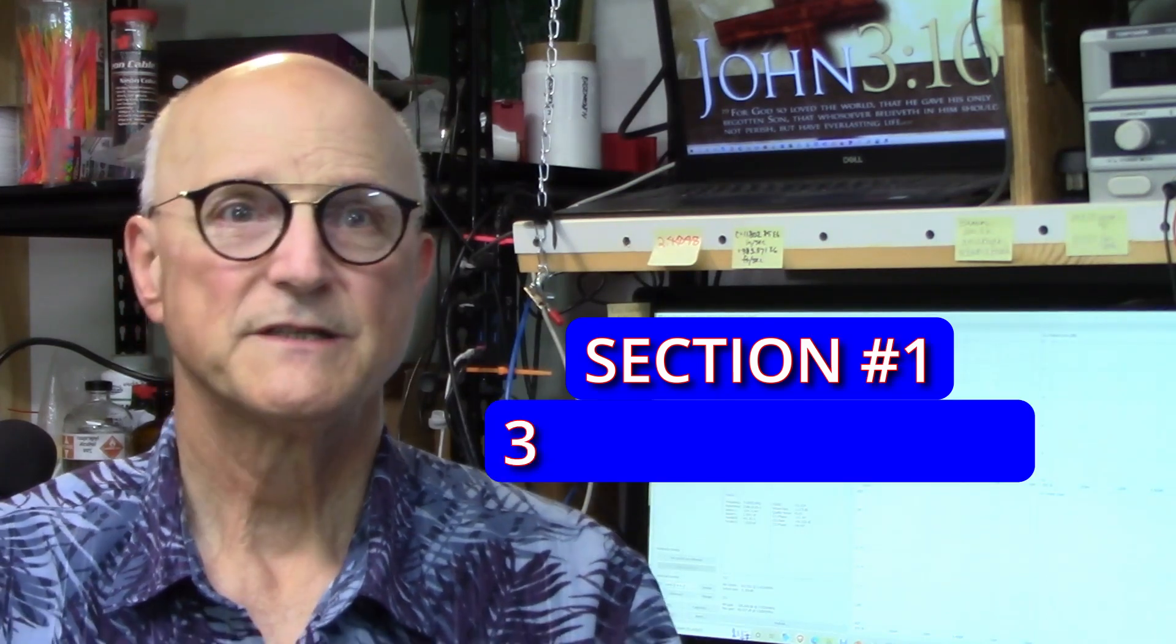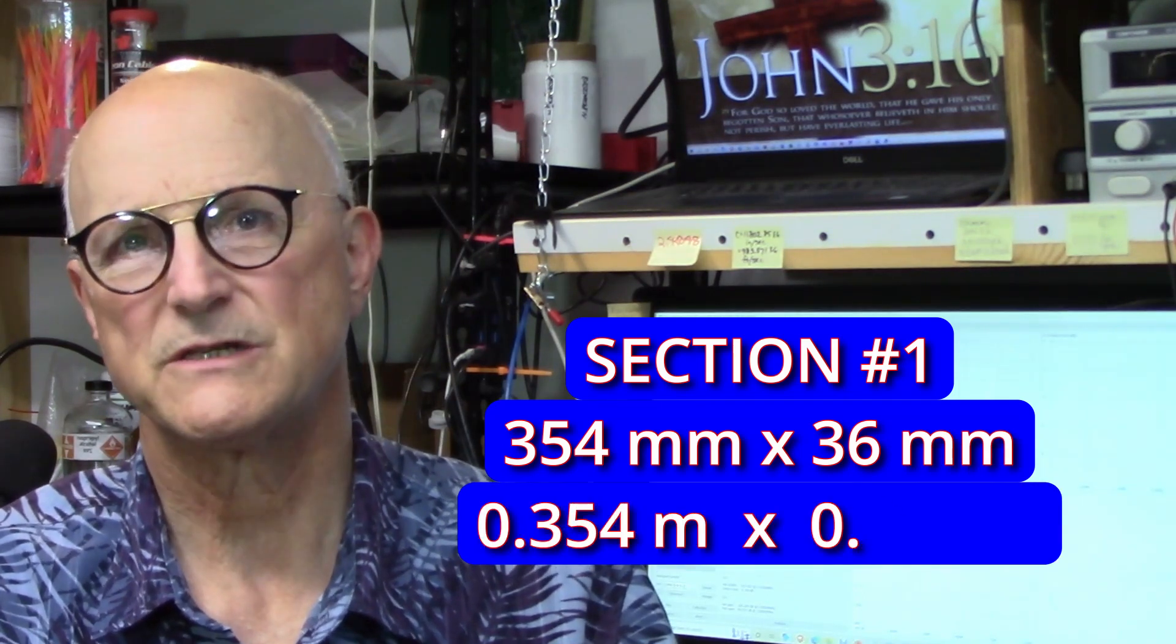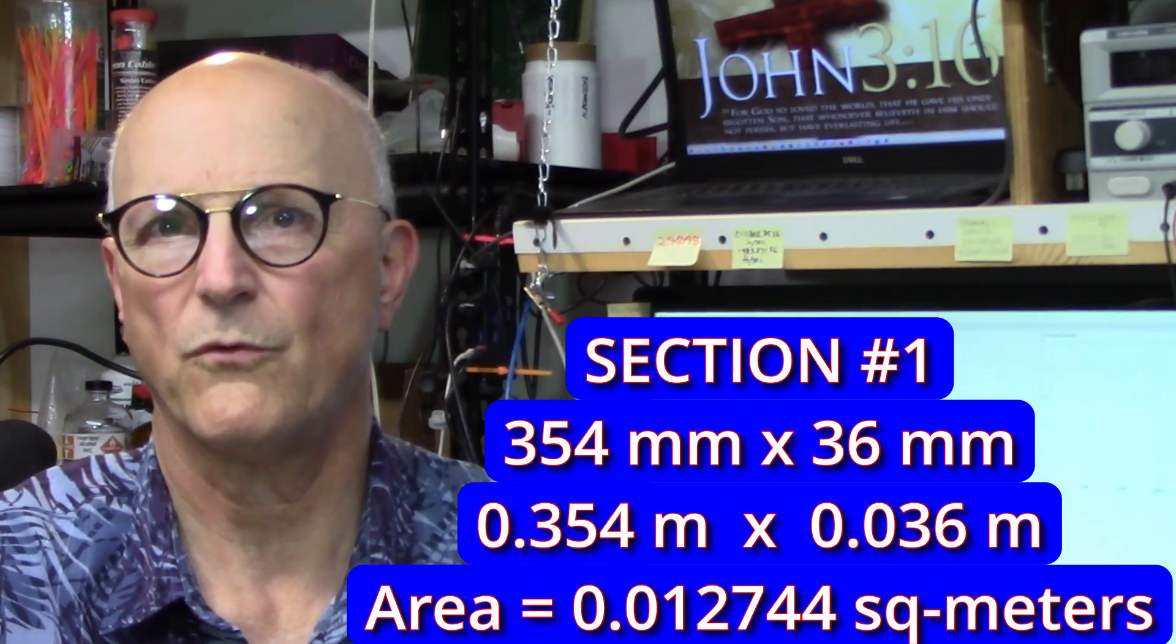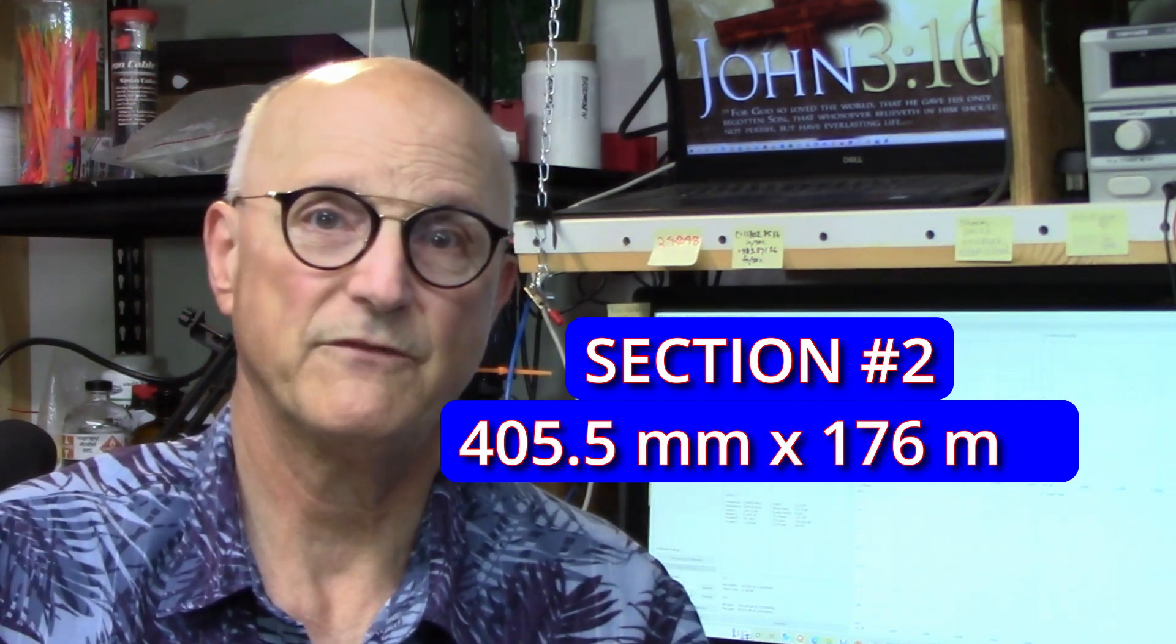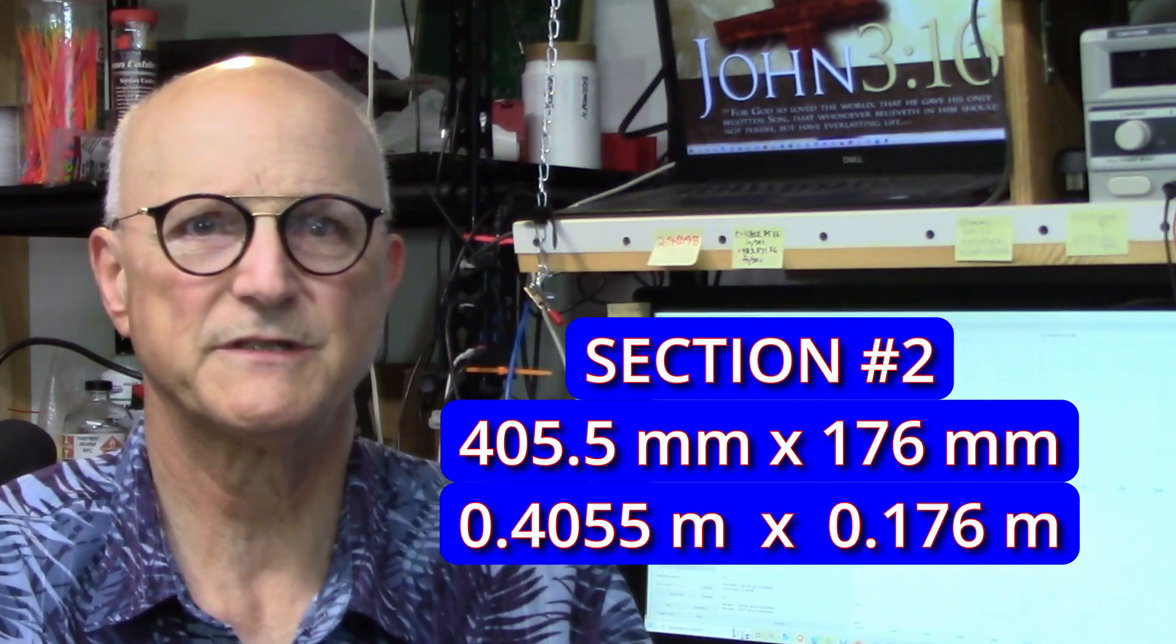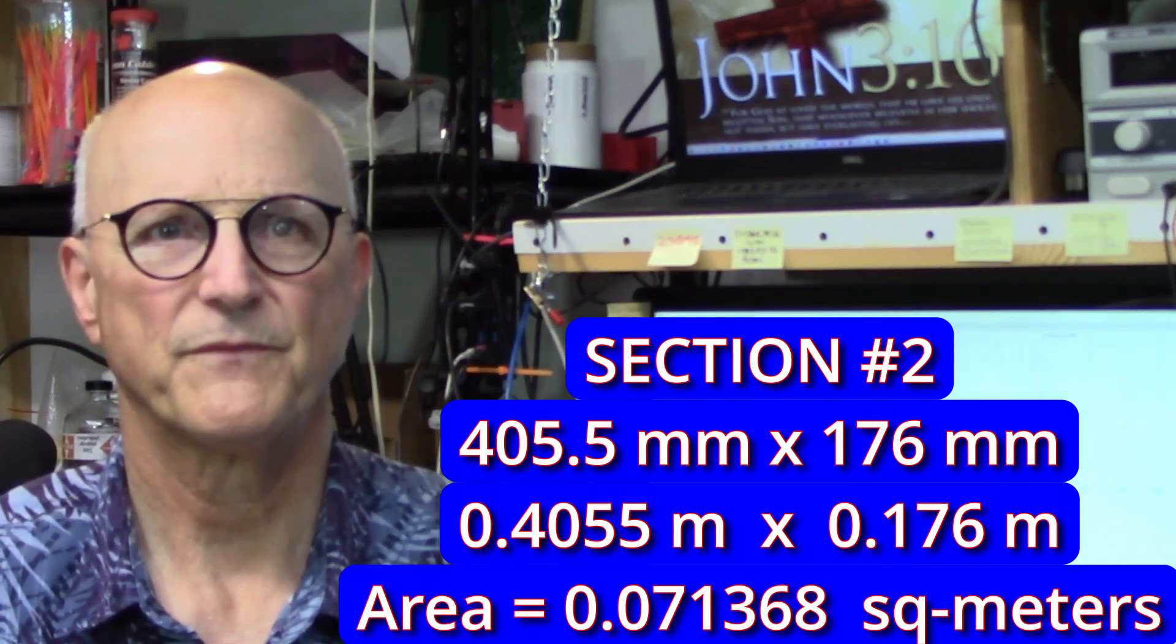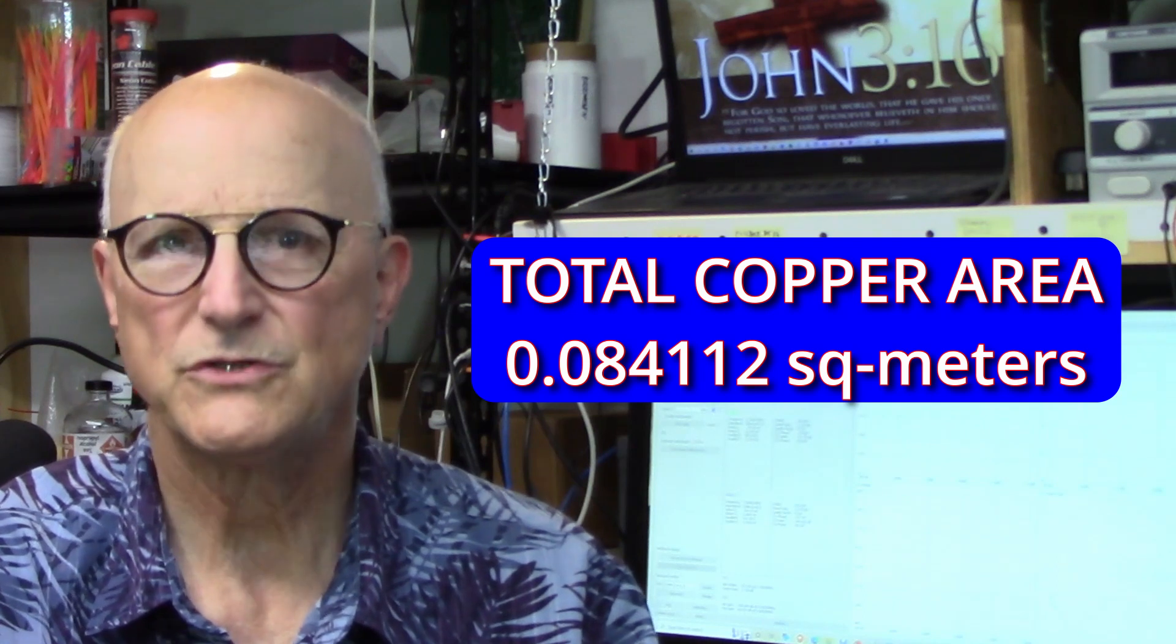We will start our calculations with the area of the copper on the board. Section 1 is 354 millimeters by 36 millimeters or 0.354 meters by 0.036 meters, which gives us a total area for section 1 of 0.012744 square meters. Section 2 is 405.5 millimeters by 176 millimeters or 0.4055 meters by 0.176 meters. And the area calculates out to be 0.071368 square meters. So the total area of copper is the addition of these two sections, which gives us a total area of 0.084112 square meters.